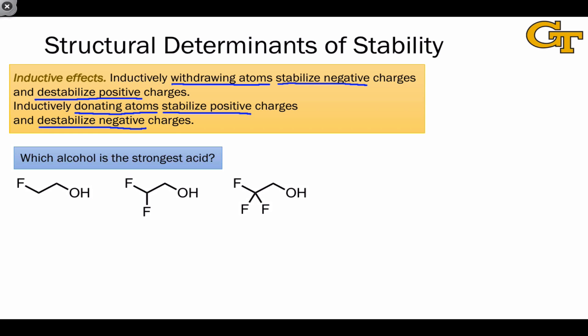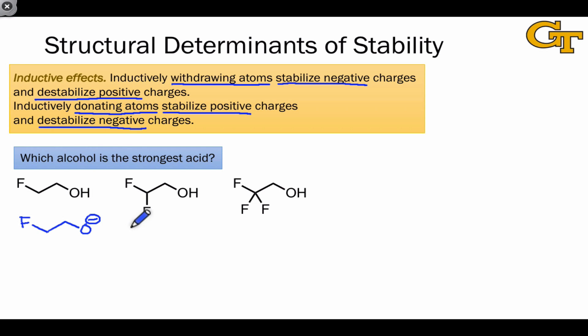Although the stability trend refers to charged species, we can often use it to draw conclusions about neutral molecules that could be converted to charged molecules through, for example, gain or loss of a proton. An equivalent question to which alcohol is the strongest acid is: which of the conjugate bases of the molecules shown — drawn out in blue — is the most stable? Inductive effects are additive, meaning the more electronegative or electropositive atoms you add to the structure, the stronger the effects.